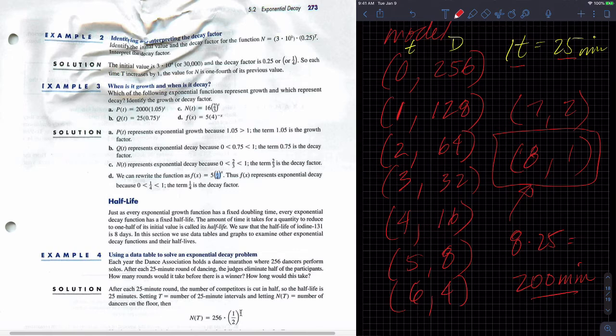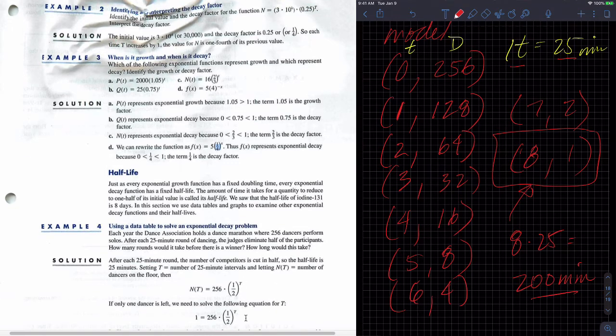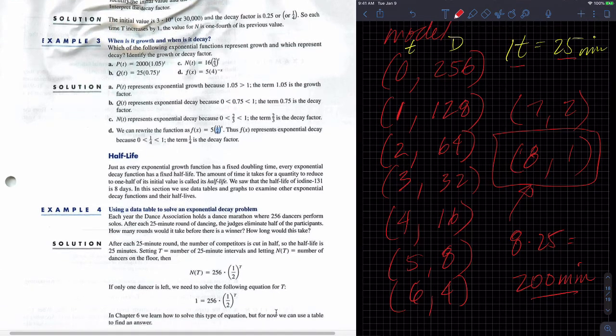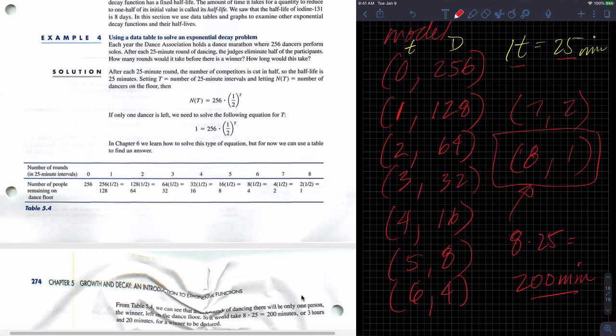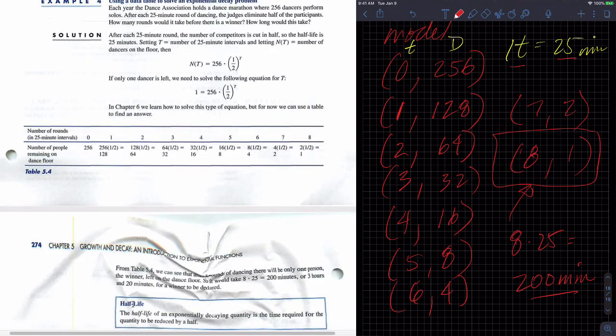And so there's the model they built. 256, we started out with half. And then T, and T is just the 25, how many 25-minute periods. And so there's our, for one dancer, if they want to do it algebraically one, we can guess and check now. In chapter six, we're going to learn how to use logarithms to solve this, but we can use a table to find the answer, which we've done. And so we get to eight. So it takes eight rounds to get this done.